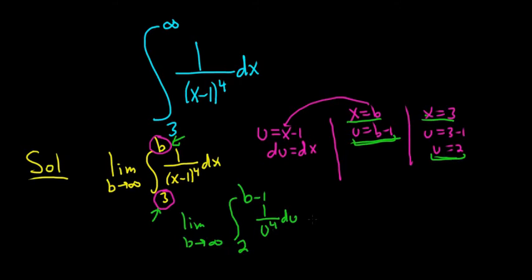To integrate this, we can bring the u upstairs. So we still have the limit sign. So limit b goes to infinity. It's a lot of notation to get used to. And then 2 to b minus 1. And we can write this as u to the negative 4 du.